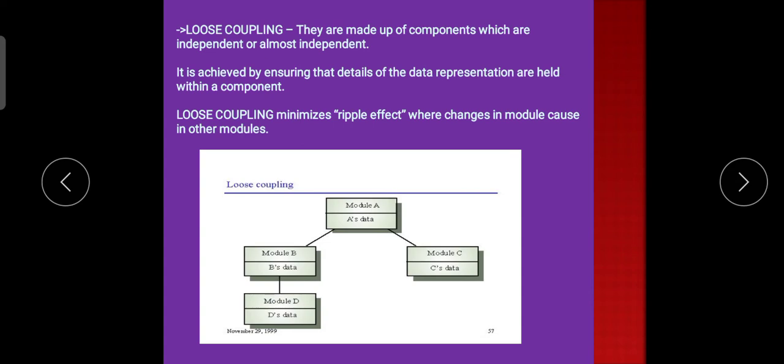Loose coupling: they are made up of components which are independent or almost independent. It is achieved by ensuring the details of the data representation are held within a component. Loose coupling minimizes ripple effect where changes in one module cause changes in other modules. It can be better explained or observed in the diagram.